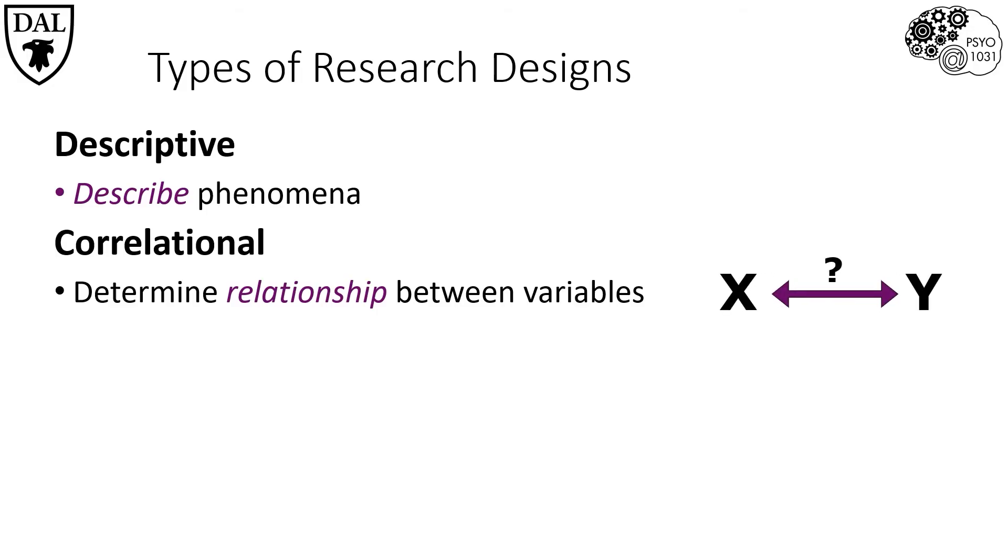The next type of research design is what's known as correlational research. Correlational research involves looking at the relationships between variables. For instance, how is x related to y? When x goes up, does y also go up? Or when x goes up, does y go down?